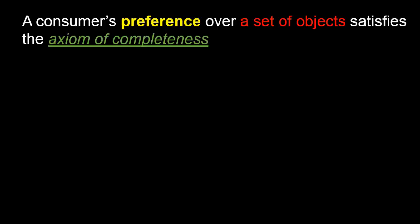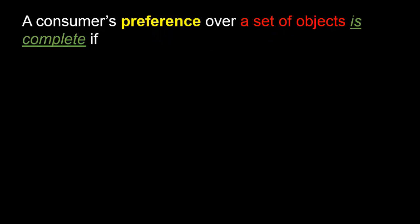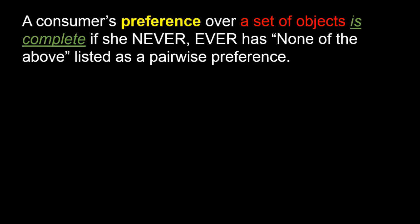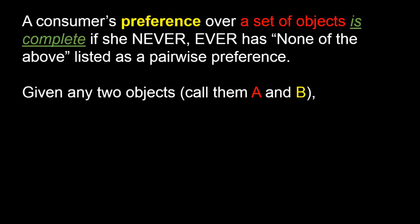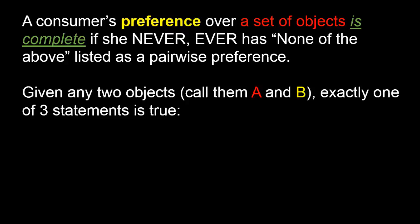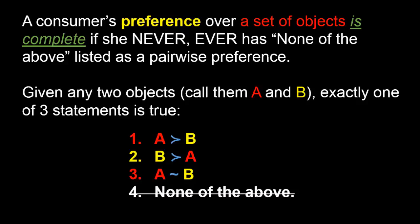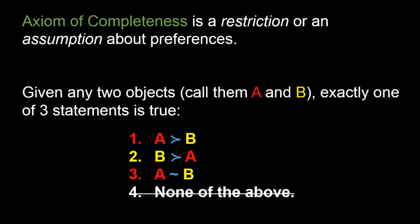We can now state what the axiom of completeness is. A consumer's preference over a set of objects satisfies the axiom of completeness — or more simply, is complete — if she never has 'none of the above' as a pairwise preference. In other words, whenever she is given any two objects, say apple and banana, she always picks one of the following three statements as true: she strictly prefers apples to bananas, she strictly prefers bananas to apples, or she is indifferent between them. She never answers 'none of the above.'